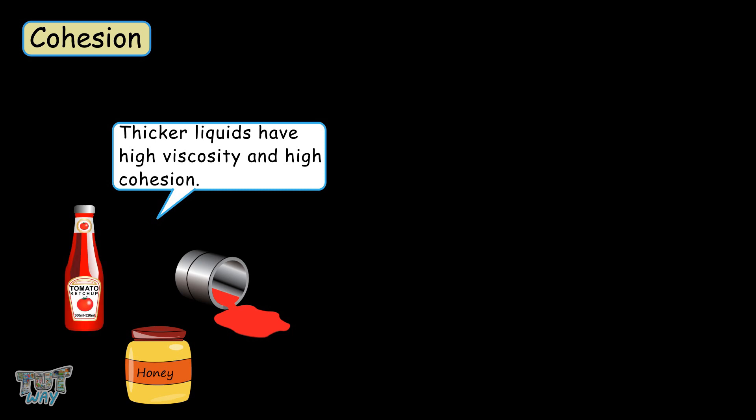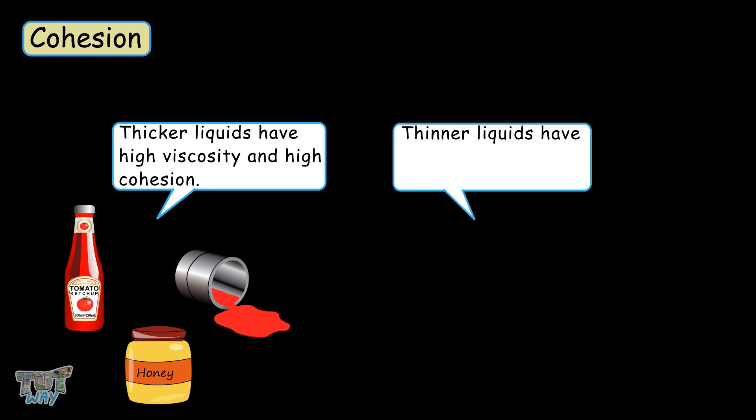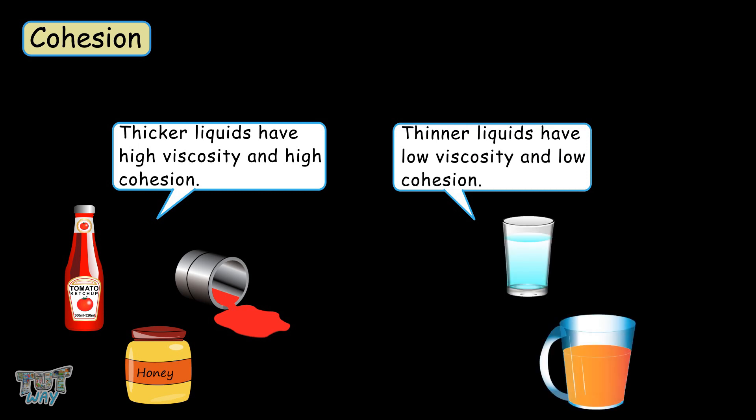Therefore, thicker liquids like honey, paint, and sauces have high viscosity and higher cohesion, and thinner liquids like water, juice, and milk have low viscosity and low cohesion.